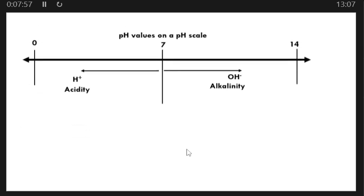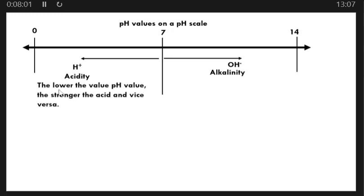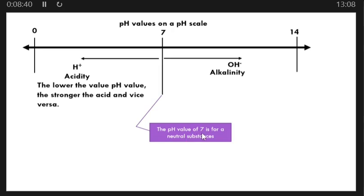The lower the pH value, the stronger the acid, and vice versa. Moving from 7 toward 0, values decrease, so lower pH means a stronger acid and higher pH means a weaker acid. The value 7 represents the pH of a neutral substance — substances that are neither acids nor bases have a pH value of 7.